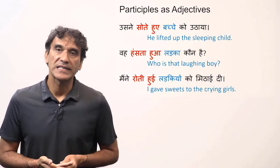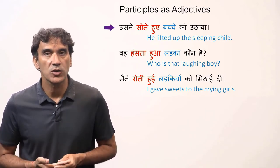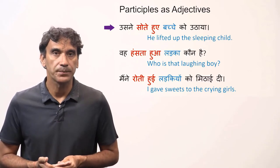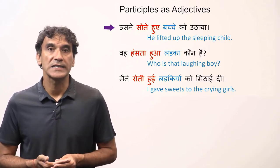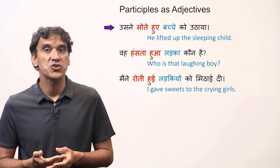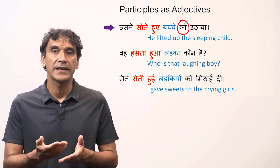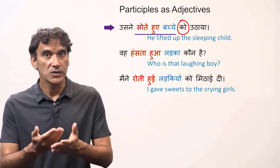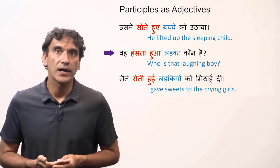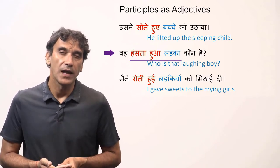Let's take participle as adjectives in sentences. 'Usne sote hue bache ko uthaya' means 'he lifted up the sleeping child'. In this sentence, the participle with the noun is 'sota hua bacha', a sleeping child. Because there is a postposition 'ko', the participle and the noun take the oblique form: 'sote hue bache ko'. 'Wo hansta hua ladka kaun hai?' means 'who is that laughing boy?', where 'hansta hua ladka' means 'laughing boy'.